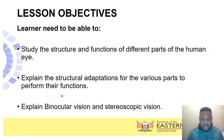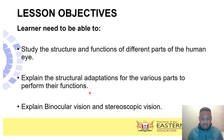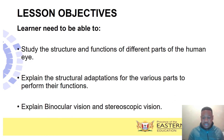You need to explain the structural adaptation for various parts to perform their function. For example, the cornea is transparent, which allows light to pass through. What if the cornea is not transparent — what would happen? So you need to be able to explain how a part is adapted to perform its functions. Then later on, you need to be able to explain the concept of binocular vision and stereoscopic vision, which will be explained later in the topic.